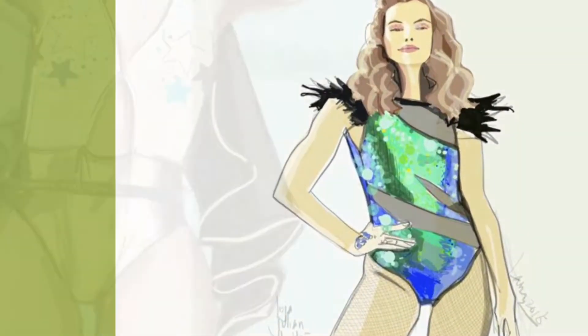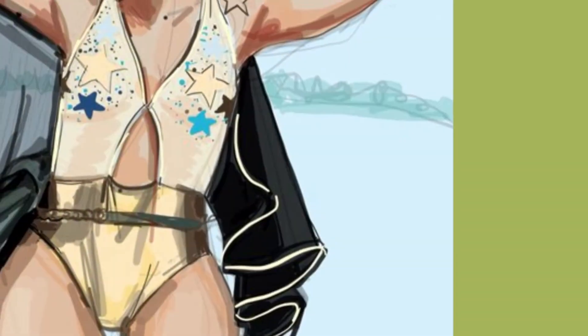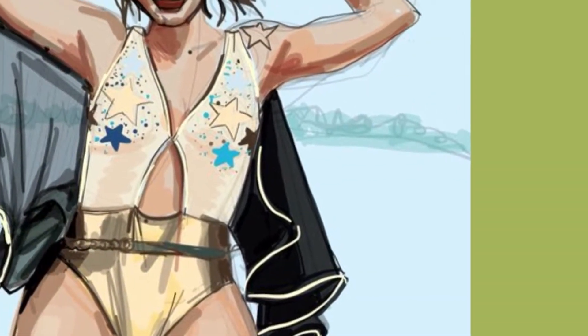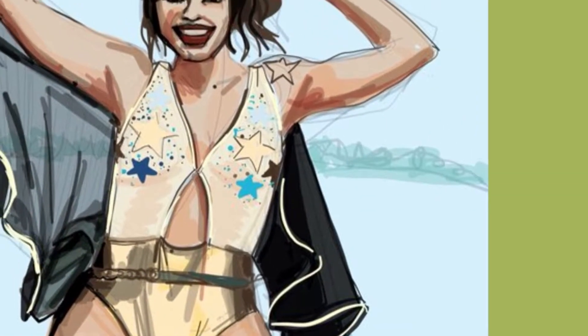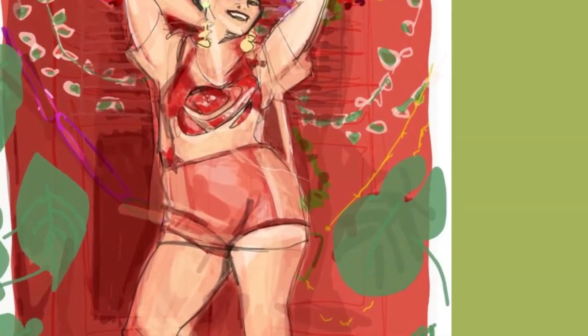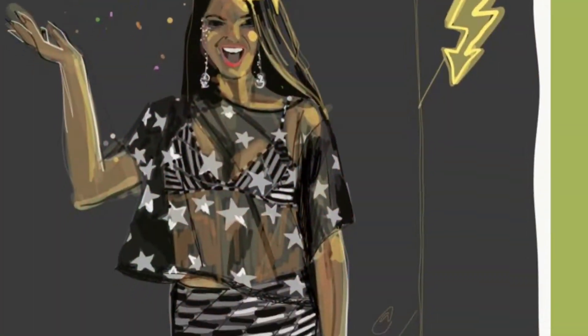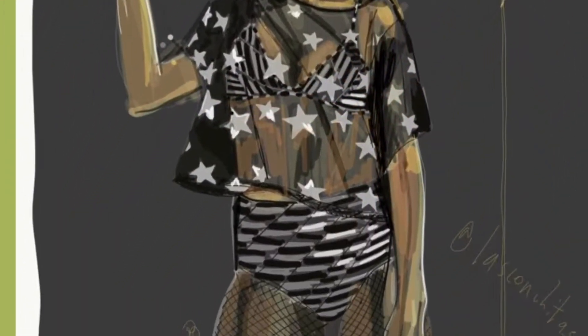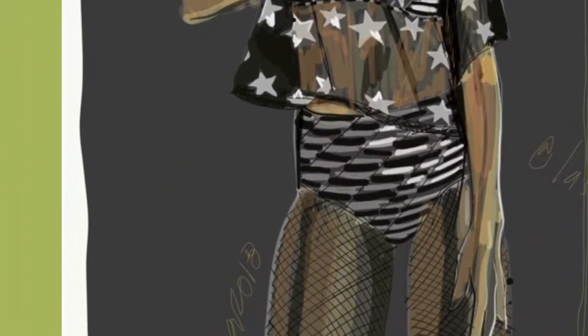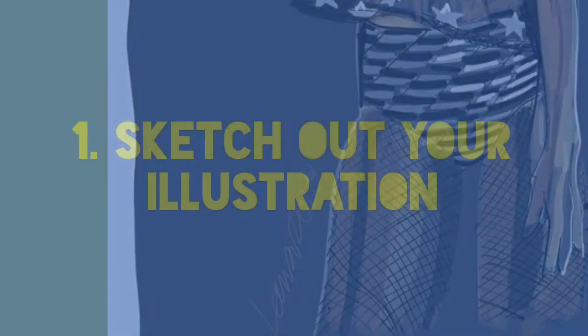I'm going to show you a time lapse of this bodysuit. You can see other examples here — here's a sheer cape, a sheer overlay shirt from Carnival in Brazil, and another sheer shirt with stars on it.